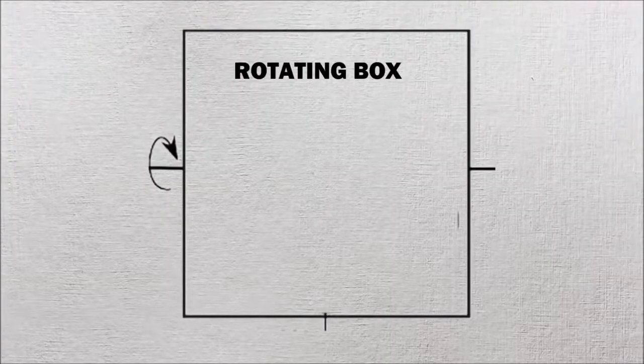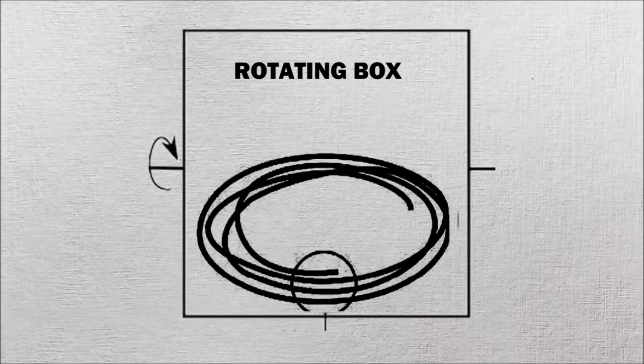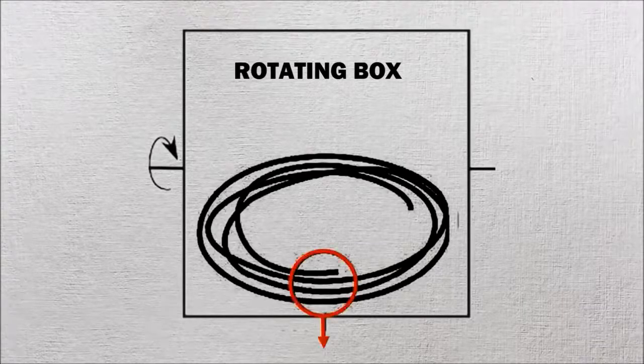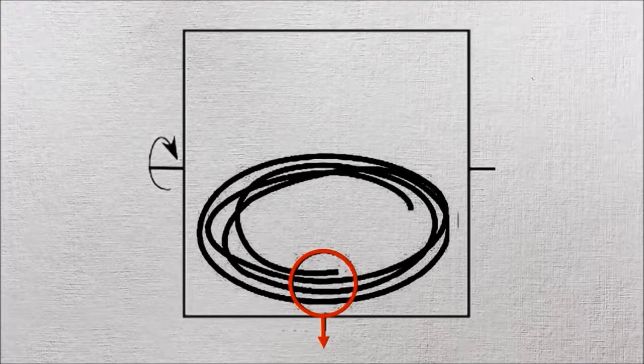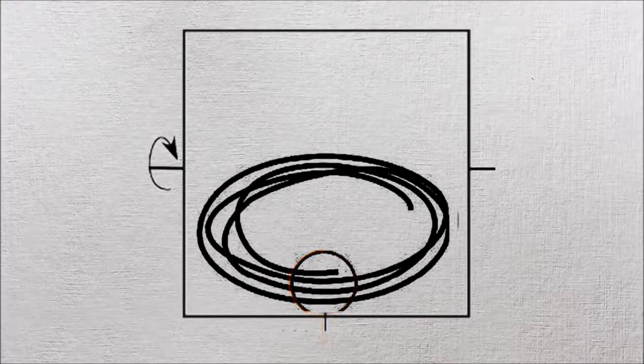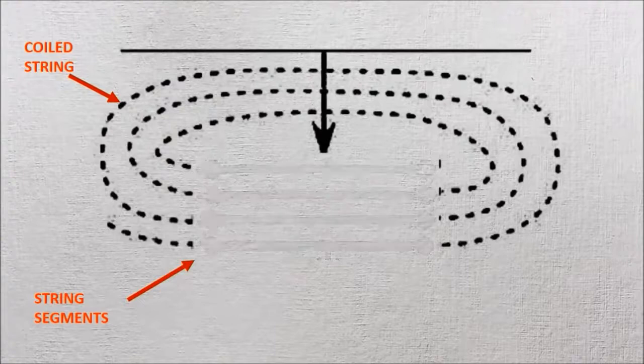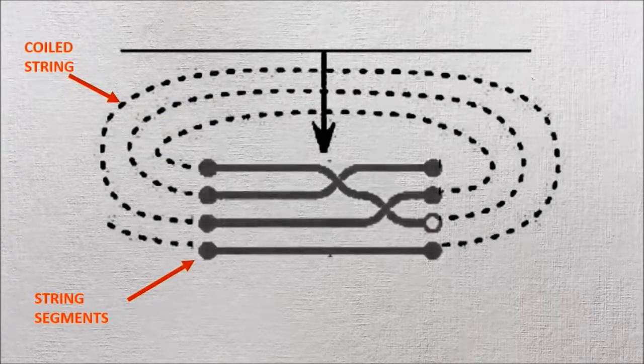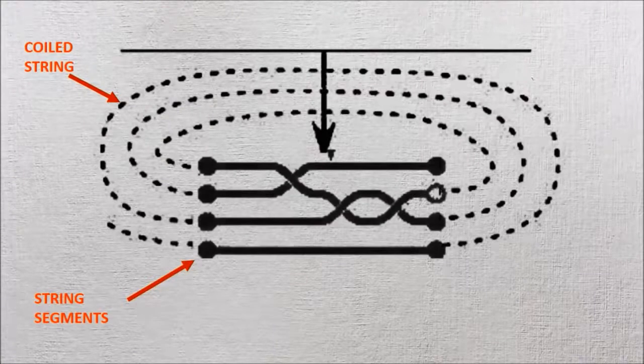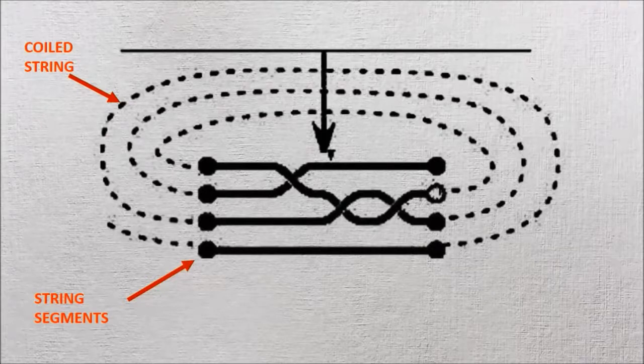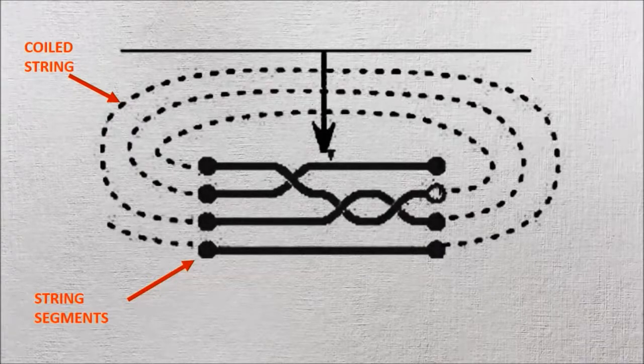Researchers created a model to explain their observation. To fit inside a box, a string has to be coiled up. This means string segments lie parallel to themselves along the length. As the box spins, the string ends fall over one another and around the middle segments. If it moves enough times, the end will essentially braid itself, tangling and creating different knots.